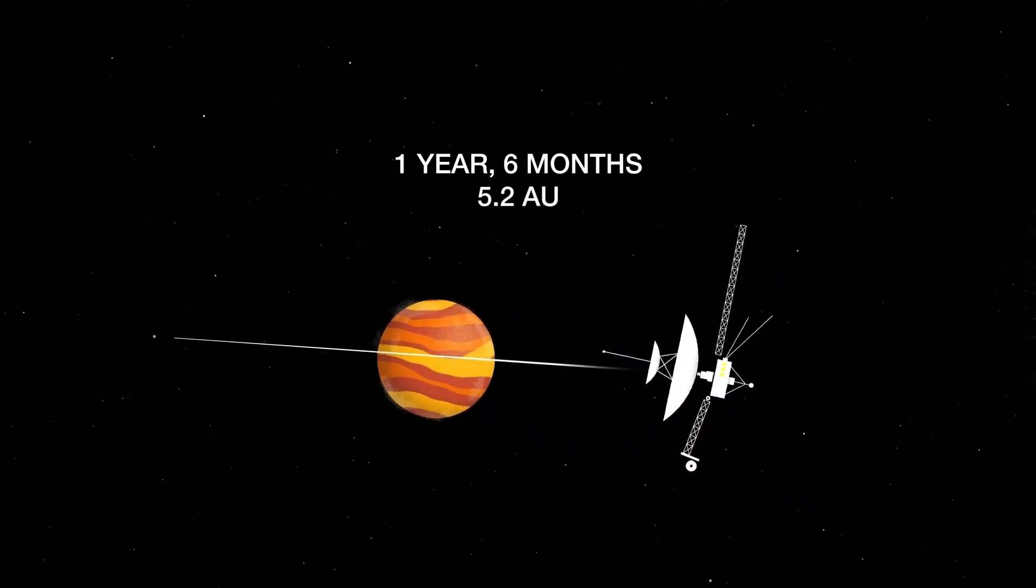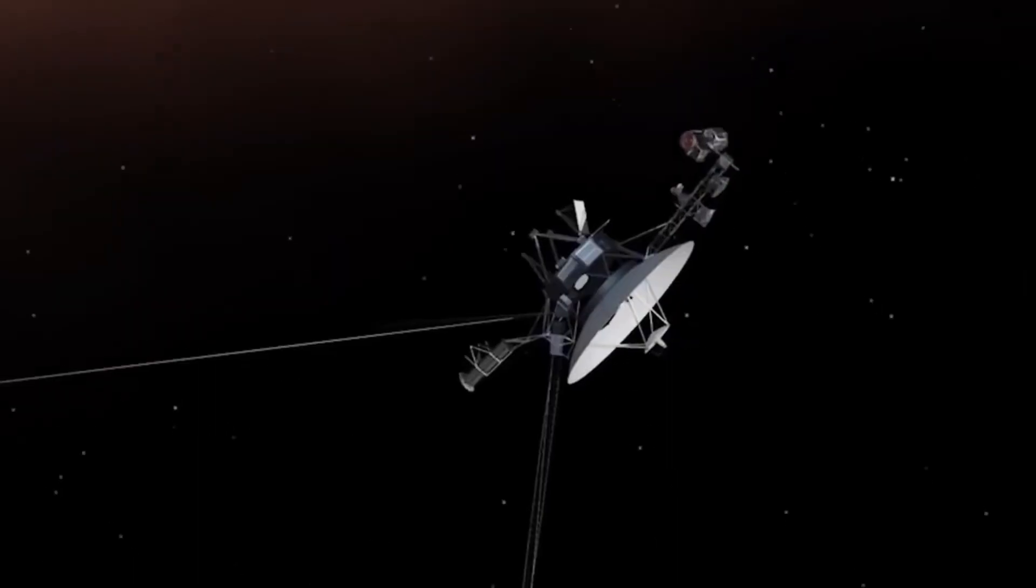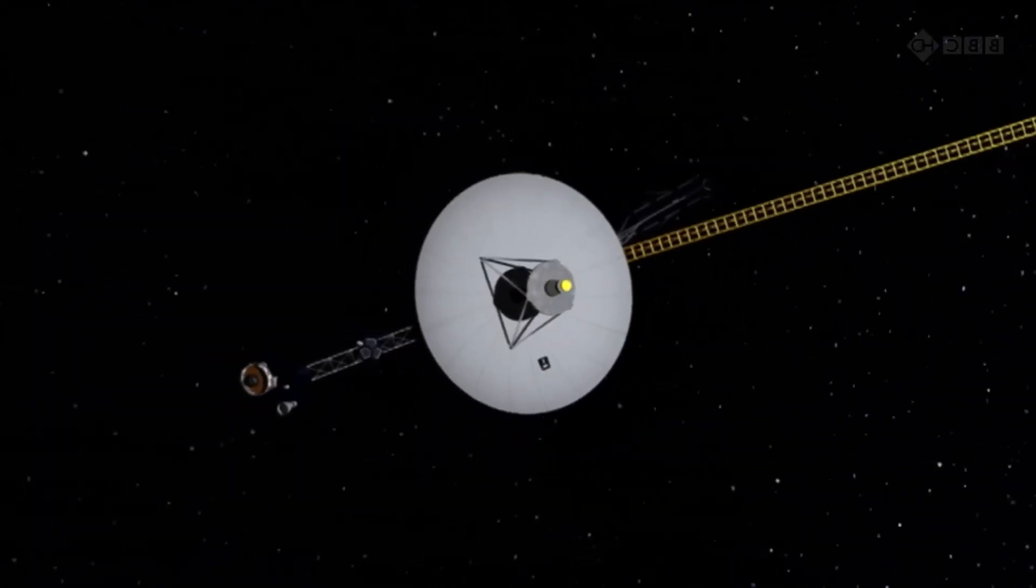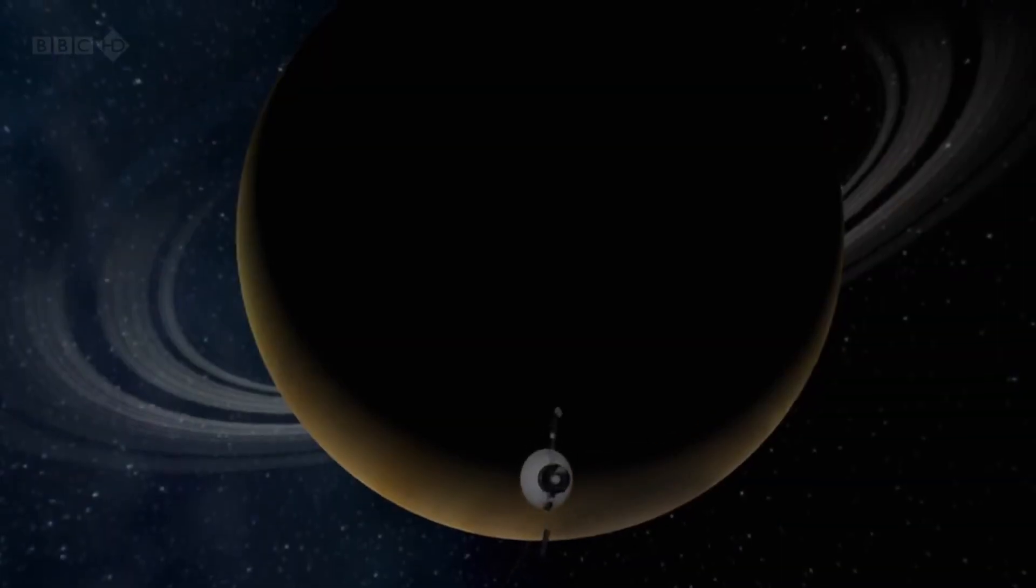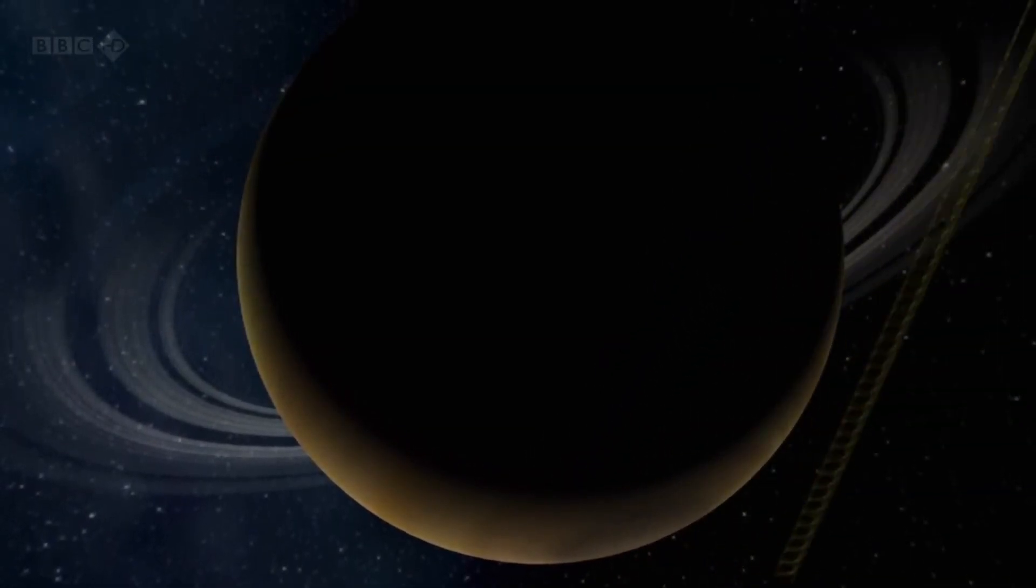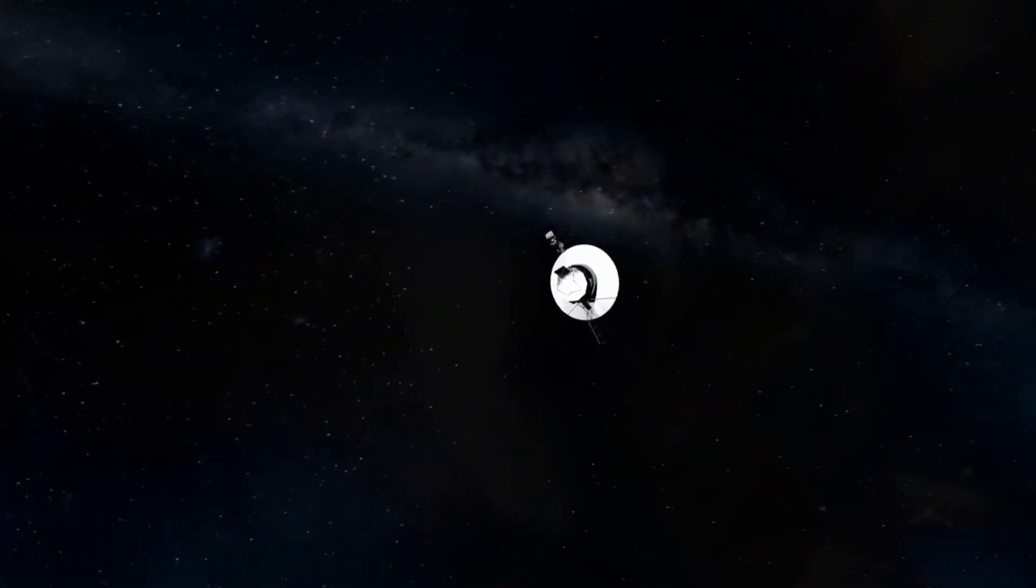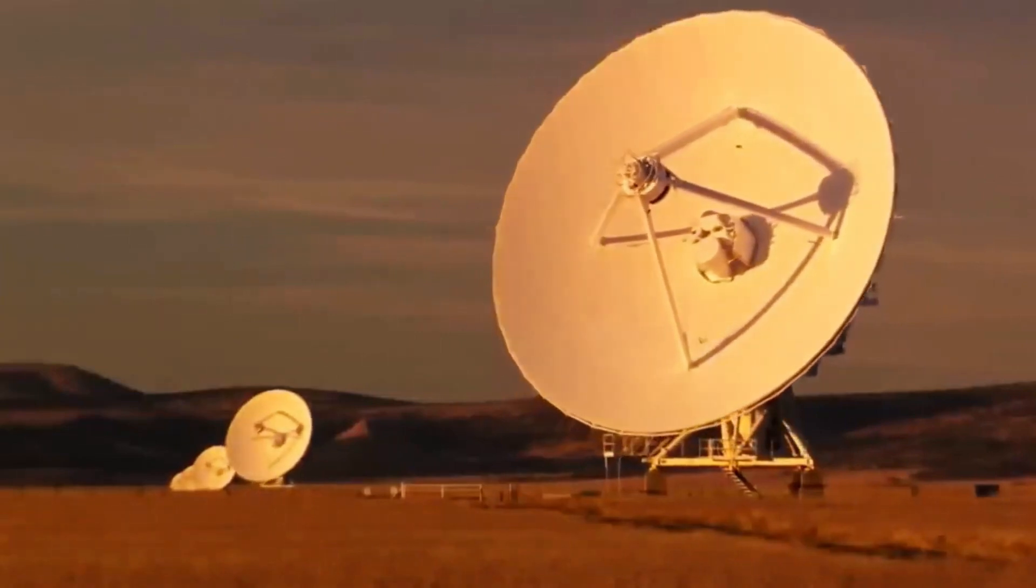But does the final radio blackout also mean the end of Voyager's journey? Well, not at all. Unless something unforeseen happens, the Voyager probes will still be bearing witness to our existence when the human era is likely to be long over. And we don't just mean the probes themselves, but also the special baggage they carry. This is called the Voyager Golden Record and consists of data plates with image and audio information about Earth and its inhabitants.